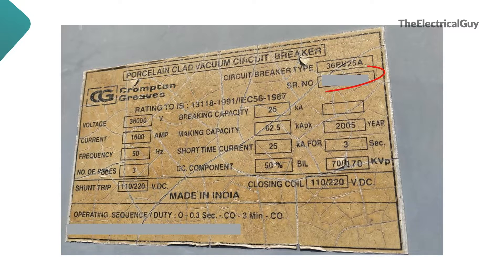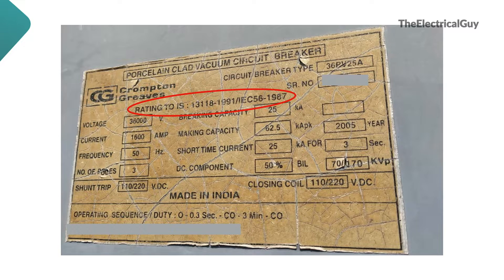Next is the serial number of the breaker — this has to be on the nameplate. Next, the reference IS or IEC standard is mentioned. This tells us about the standard based on which the circuit breaker is manufactured. For this case, it is IS 13118 and IEC 56.